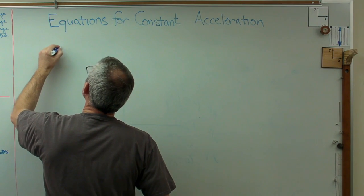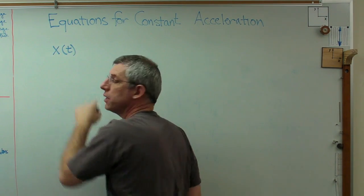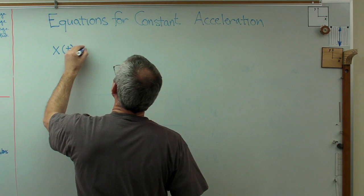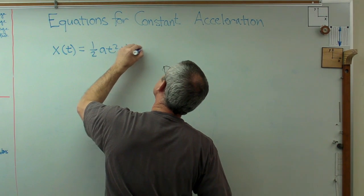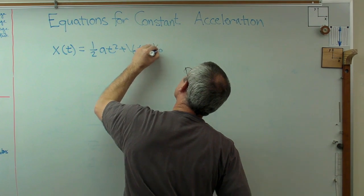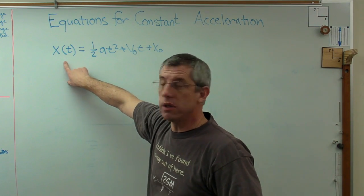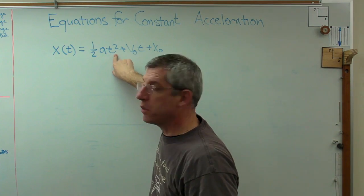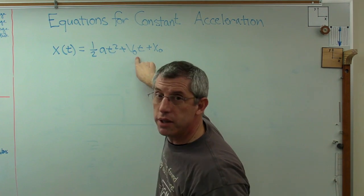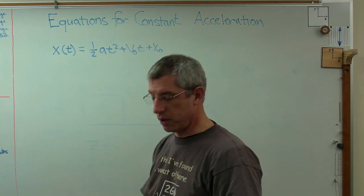One of the things you may have seen before is your position as a function of time. X as a function of t is one-half at squared plus v zero t plus x zero. So that's your position as a function of time is equal to one-half times the acceleration times time squared plus the initial velocity times time plus the initial position.